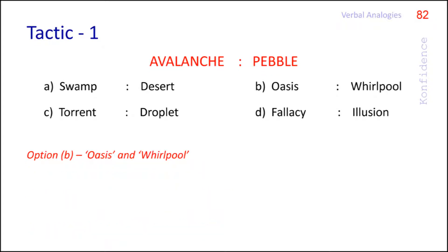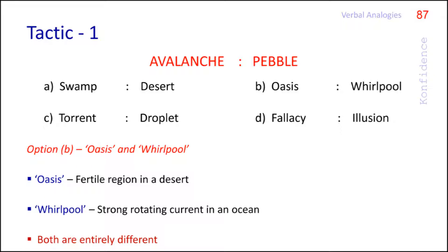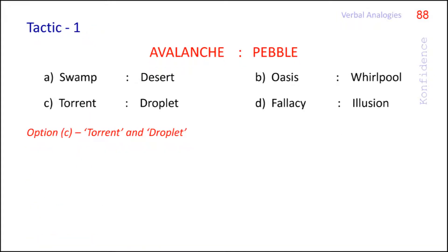In option B, oasis means a fertile region in a desert and whirlpool is a strong rotating current in an ocean. They are entirely different.